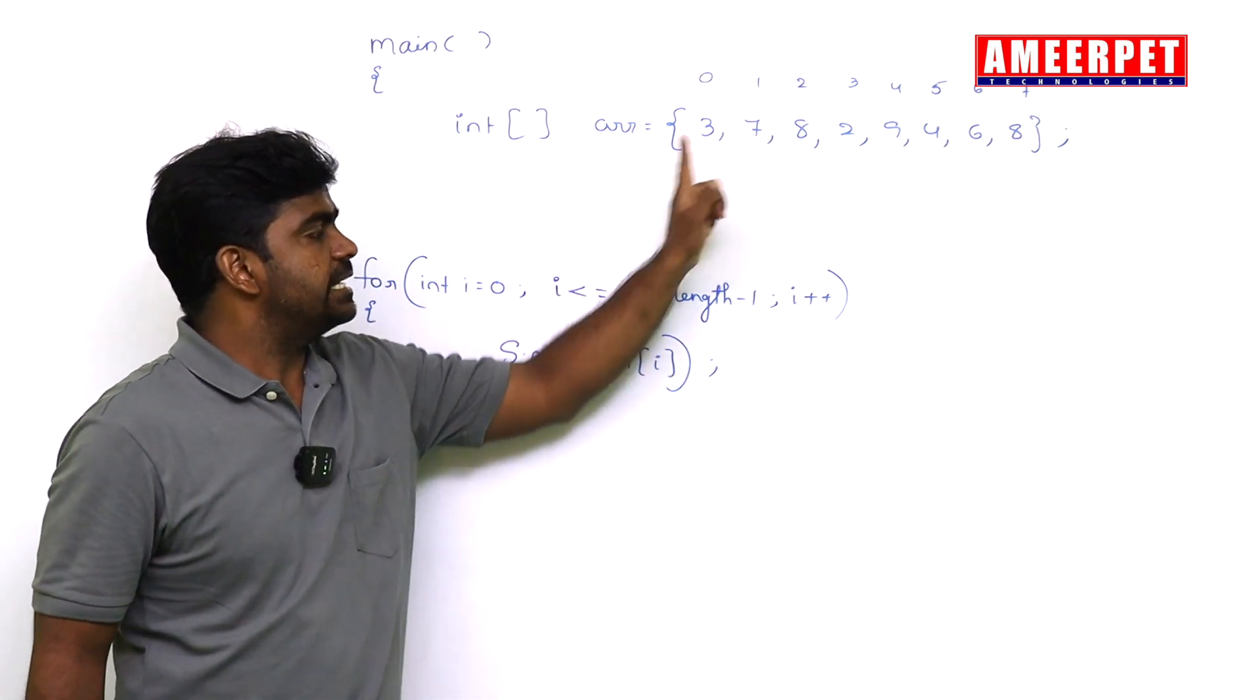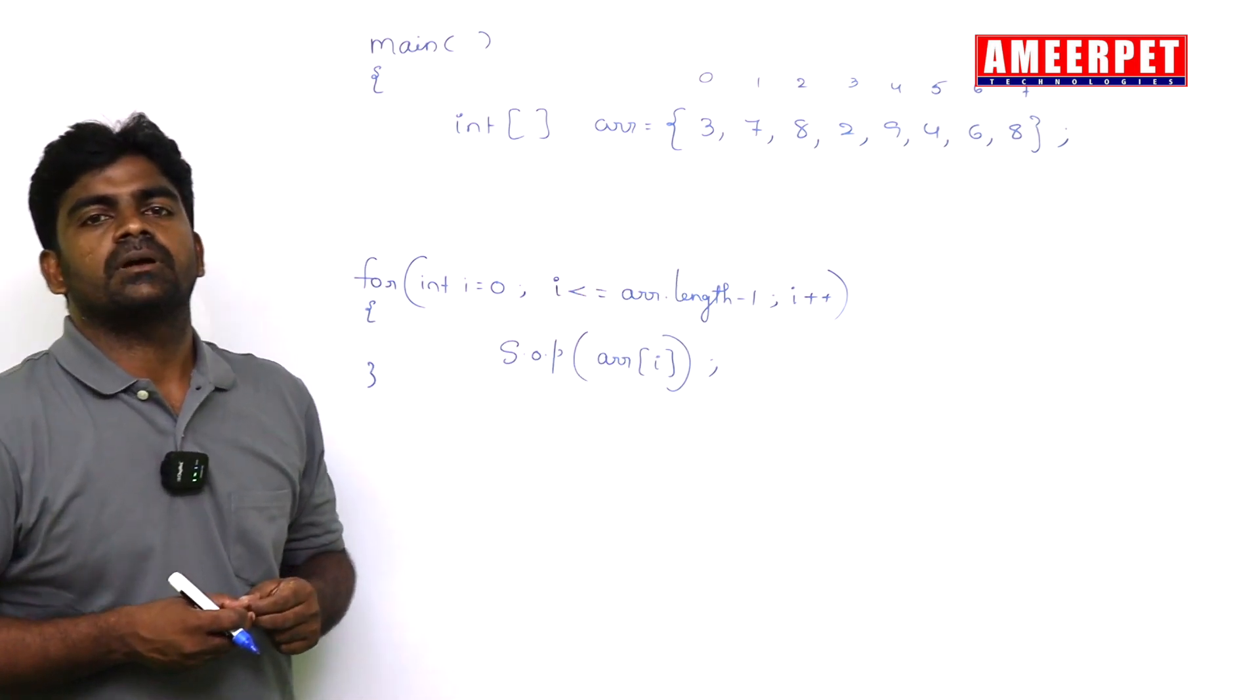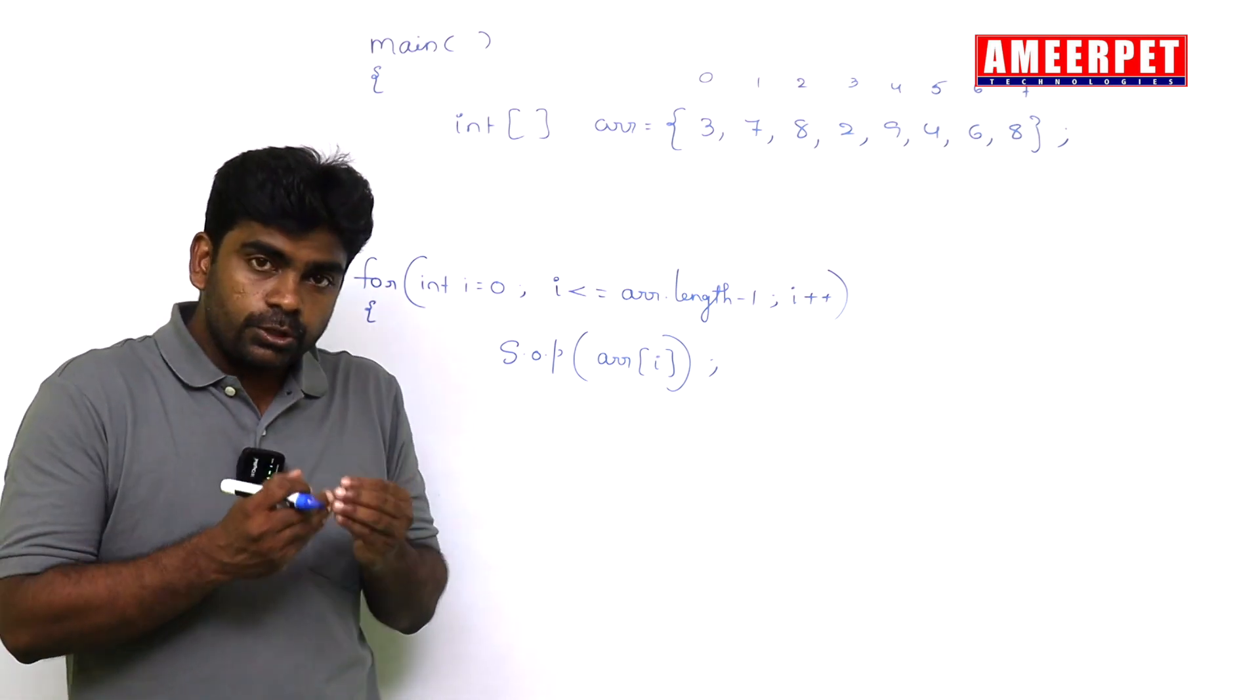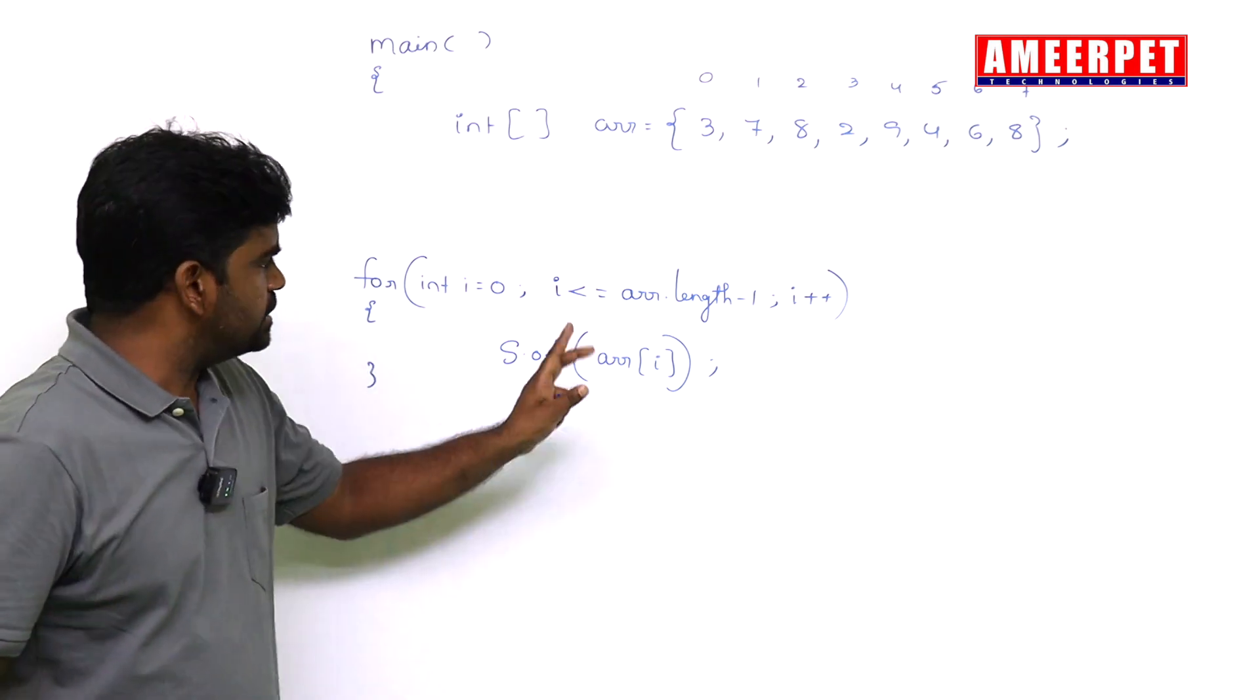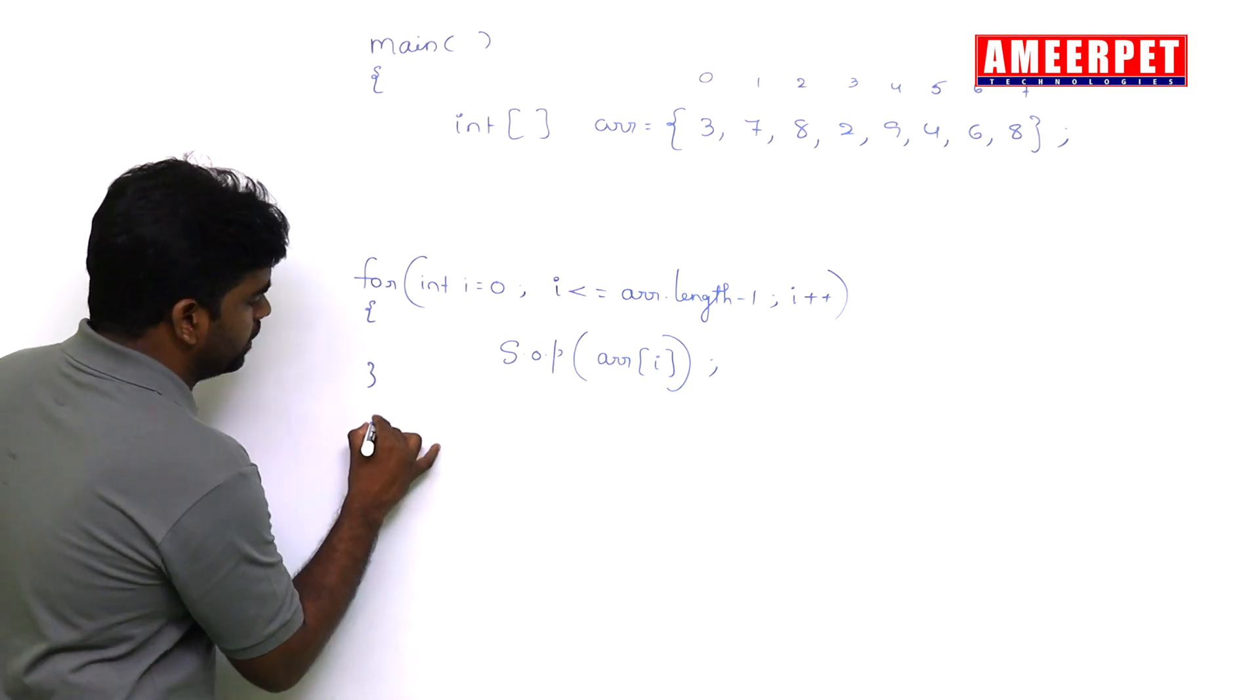Now the question is, I want to display the elements in reverse order. Reverse means just reverse the loop, not more than that.